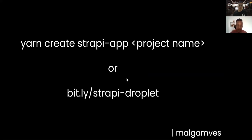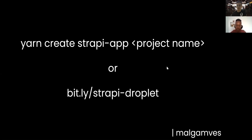If you want to get started with Strapi, my preferred package manager is Yarn. There's an NPM and NPX alternative, but you can start with 'yarn create strapi-app' and your project name, or you can use a DigitalOcean droplet — I have a link to that. So the first command is to get a Strapi project done and the second one is to get a Strapi project running on DigitalOcean.